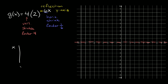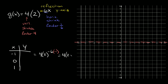We can plot a few points to graph this. Using negative one, zero, and one: plugging in negative one gives y equal to four times two raised to the negative six times negative one, which is four times two raised to the positive six. Two raised to the sixth is 64, so we have four times 64, which is 256.